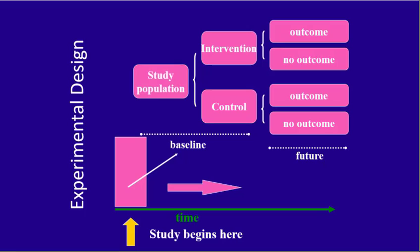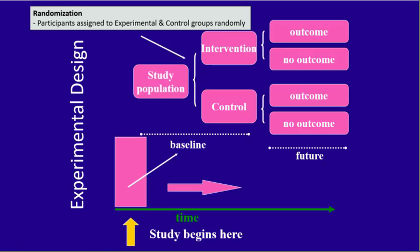This experimental study design is further depicted on this slide. The study begins at a particular point in time with the enrollment of a study population, which is then divided into control and experimental groups. This is the baseline point of the study, at which time the intervention or placebo is applied and outcomes thereafter are observed and recorded. An important aspect of experimental design is randomization, whereby the assignment of study participants into control and experimental groups is done randomly, helping to guard against selection bias between the two groups.